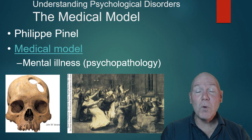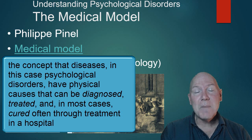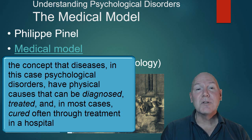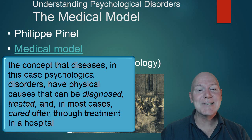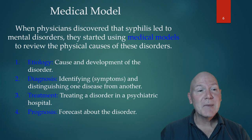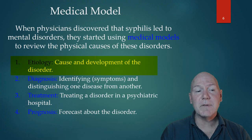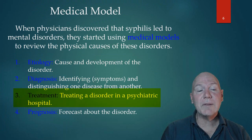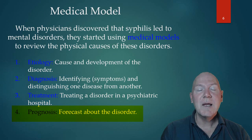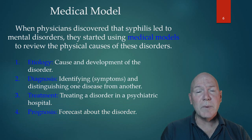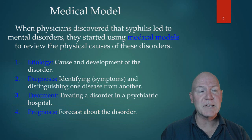Now we use more of a medical model, which basically looks at causes, treatments, and all those kinds of things. We talk about psychopathology — that is, mental illness. The medical model includes looking at etiology, which is the cause and development of the disorder; the diagnosis, identifying the symptoms; and treatment, how do we treat this disorder; and the prognosis, what's going to happen in the future of a person with this disorder — which is what we do for many things we consider traditionally medical, like flus or diseases.